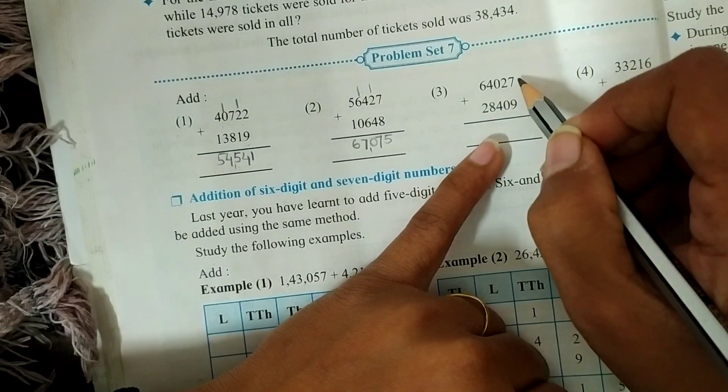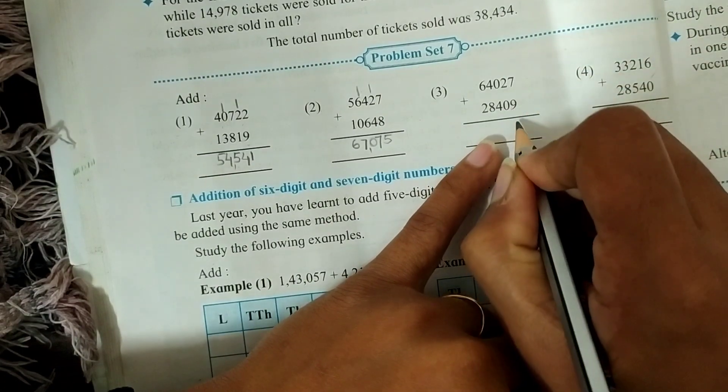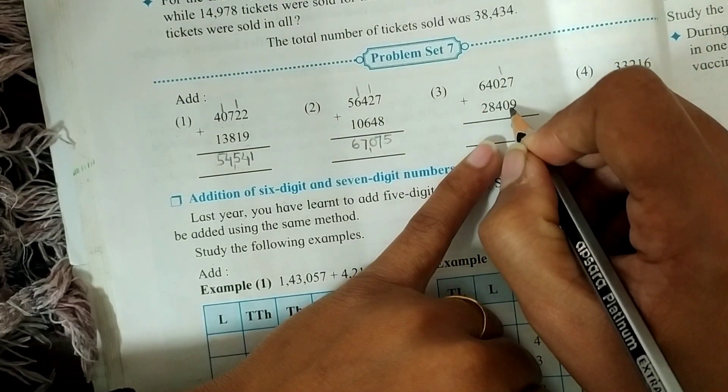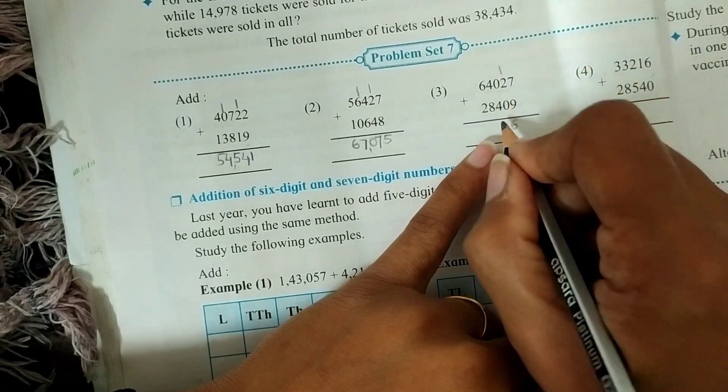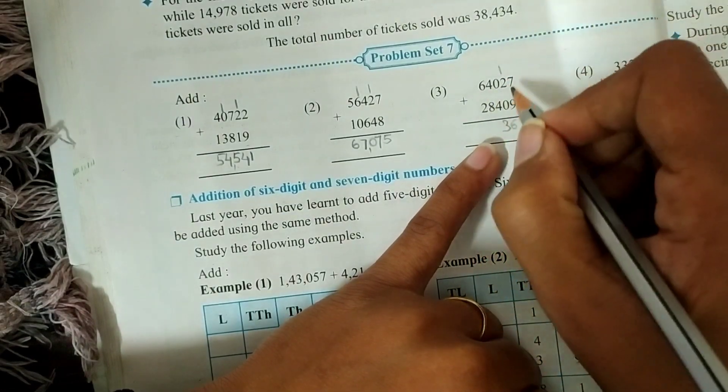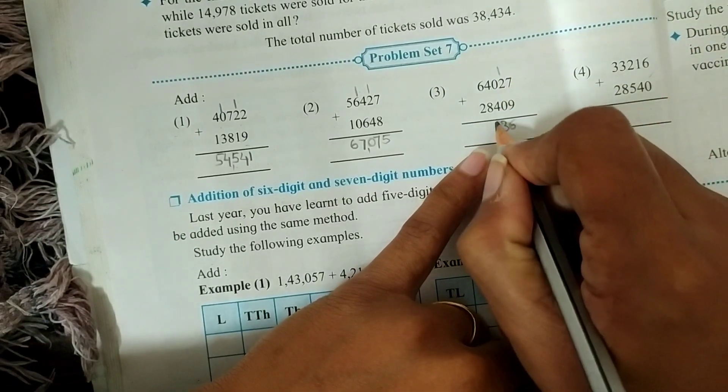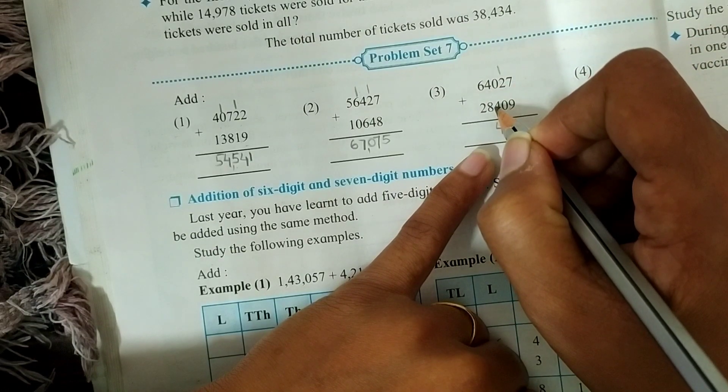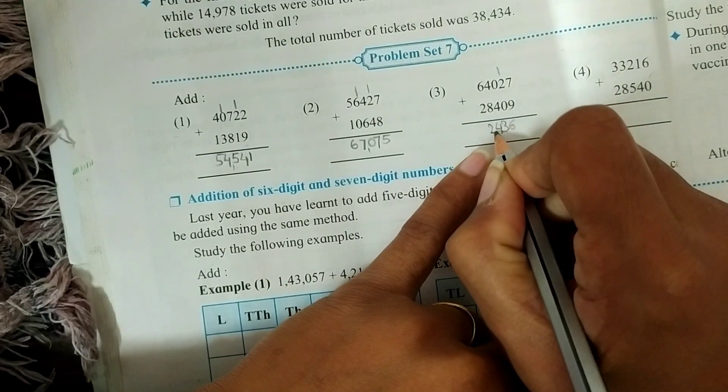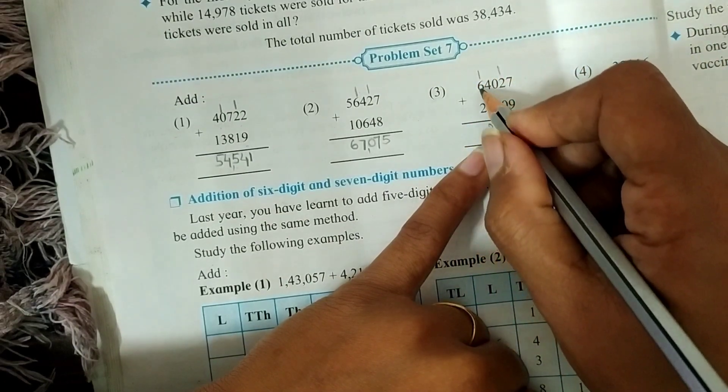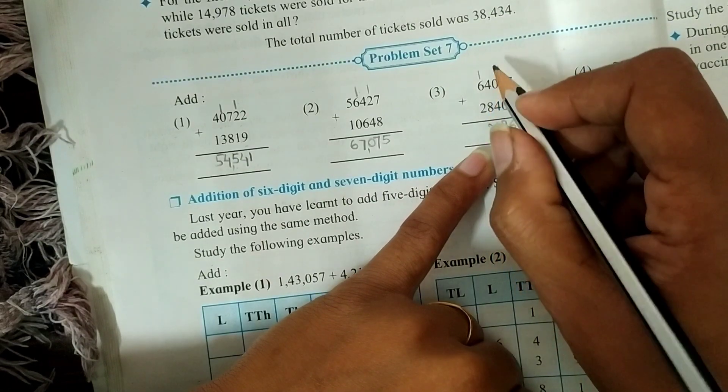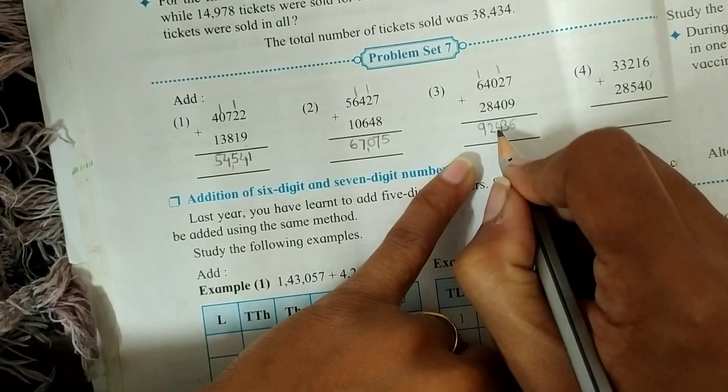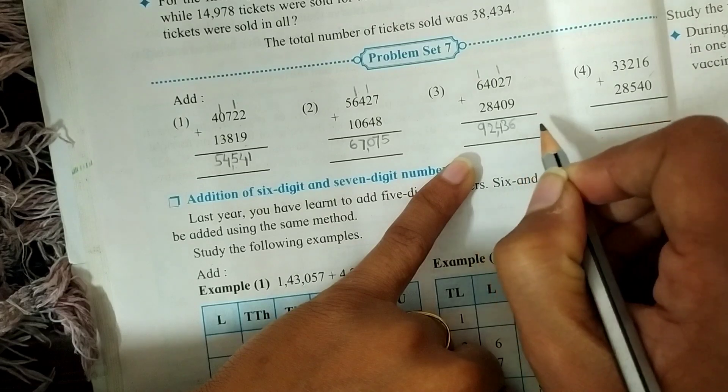Now the third question is 64,027 plus 28,409. Start from units place. 7 plus 9, the number we get is 16. 1 is carried forward. 2 plus 0 is 2, and carried 1 makes 3. 0 plus 4 is 4. 4 plus 8, the number we get is 12, and 1 is carried forward. 6 plus 2 is 8, and plus 1 makes 9. So the answer for the third question is 92,436.